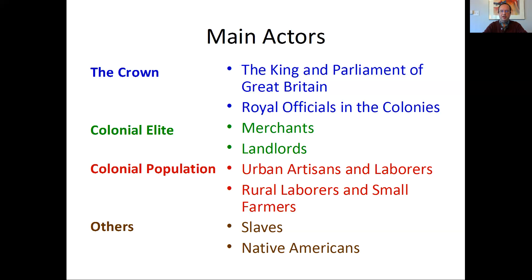As you saw, the perceived threat of Native raids and Native claims to the land was an important part in the way that the Seven Years War was fought. And the British prohibition on moving into Indian territory, into Native land, was one of the grievances that the colonists felt they had after the Seven Years War.